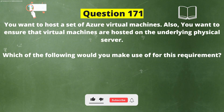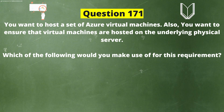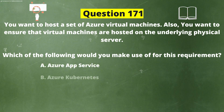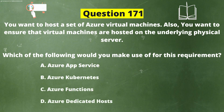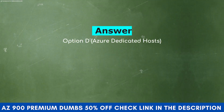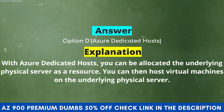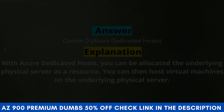You want to host a set of Azure Virtual Machines and ensure that virtual machines are hosted on the underlying physical server. Which of the following would you make use of? Option A: Azure App Service. Option B: Azure Kubernetes. Option C: Azure Functions. Option D: Azure Dedicated Host. The correct answer is Option D, Azure Dedicated Host. With Azure Dedicated Host, you can be allocated the underlying physical server as a resource, and then host virtual machines on it.